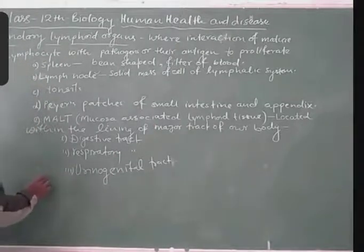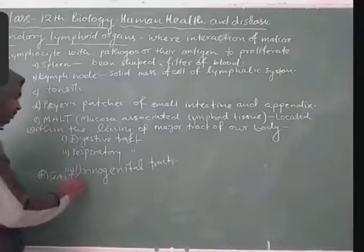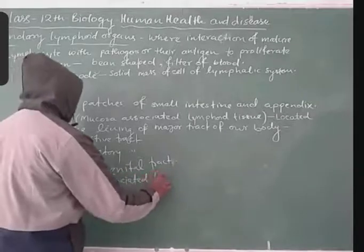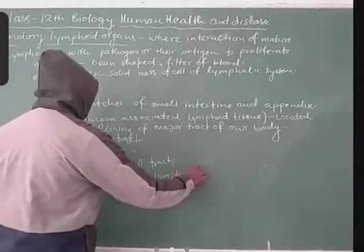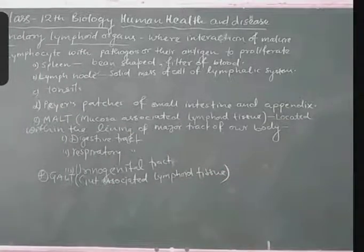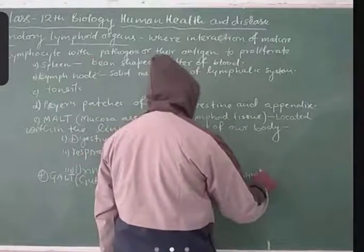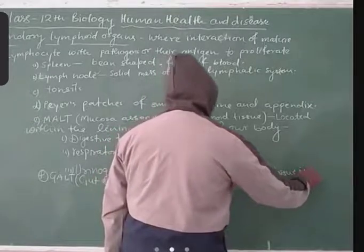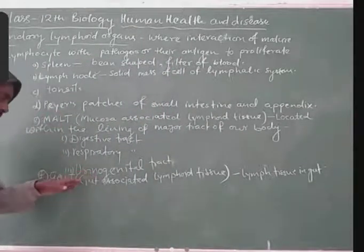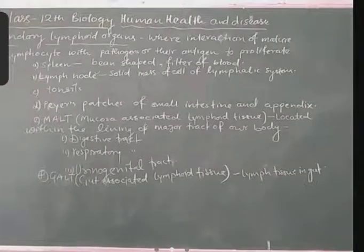Another term also given is GALT. GALT stands for gut-associated lymphoid tissue. This means that Peyer's patches can also be called GALT — gut-associated lymphoid tissue.